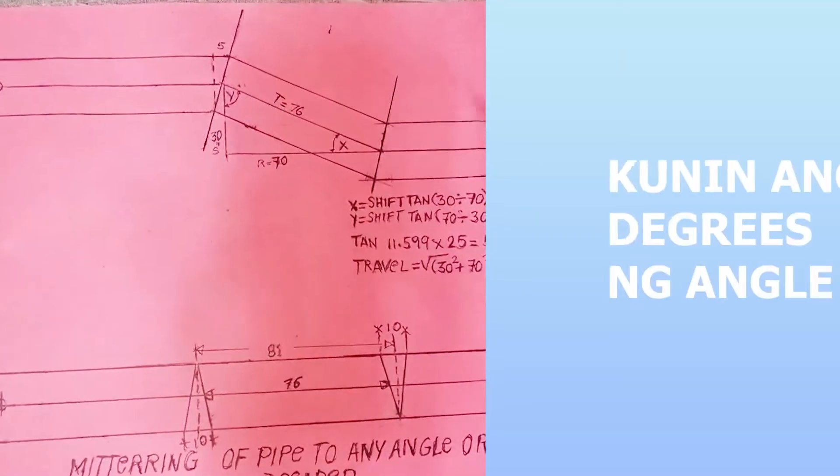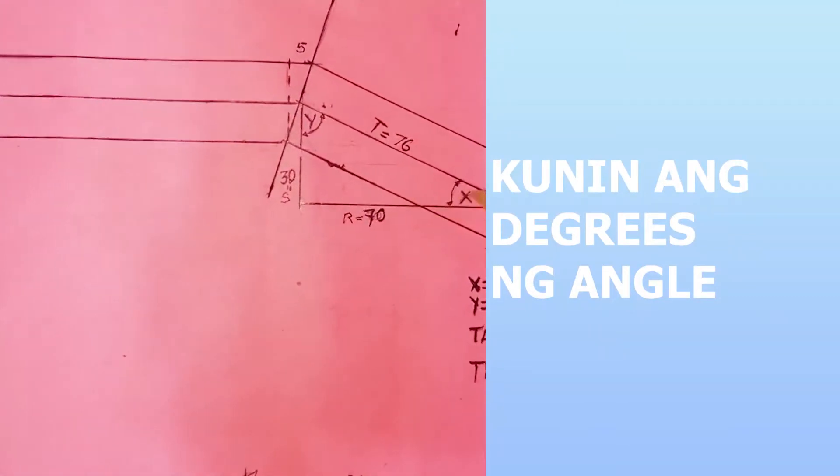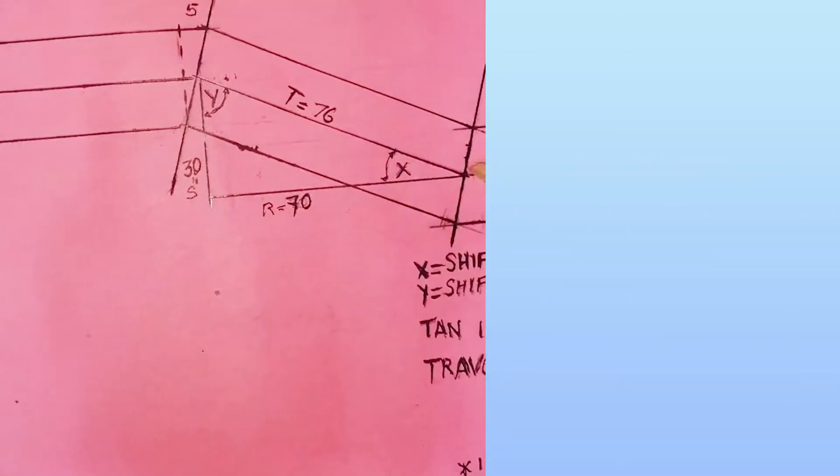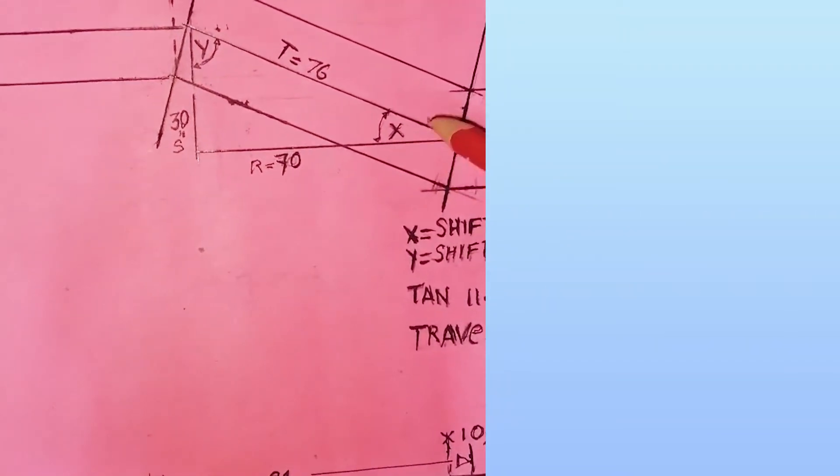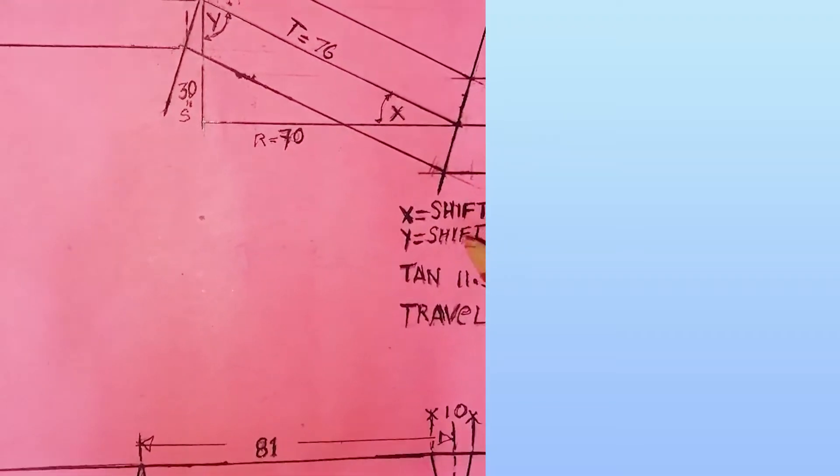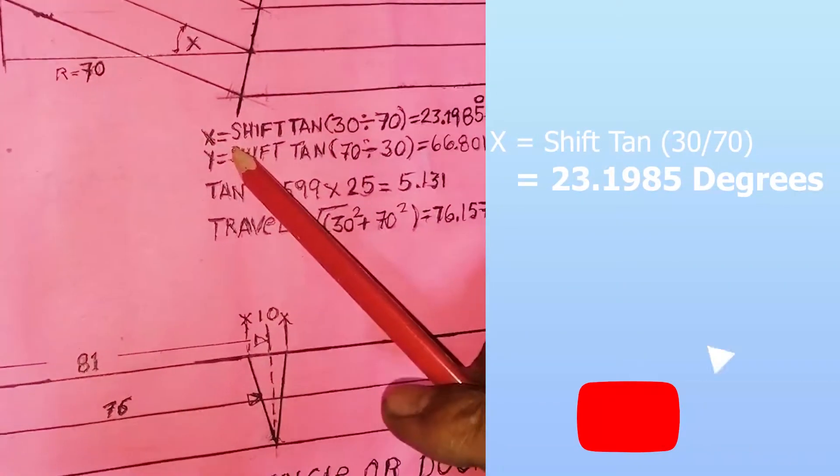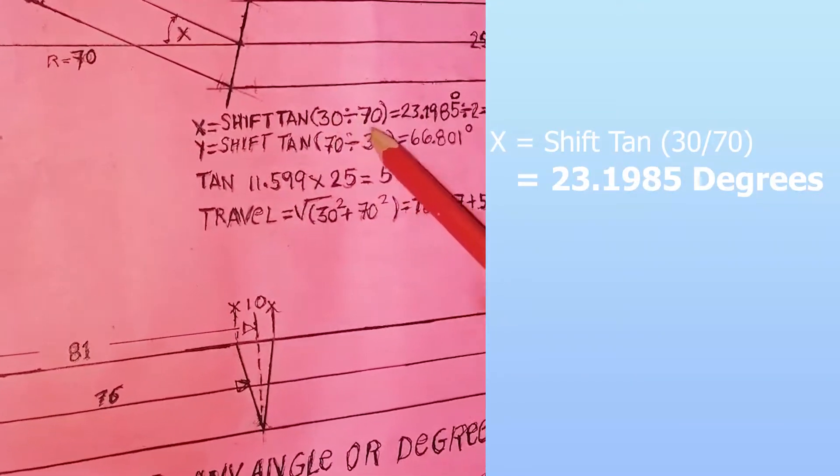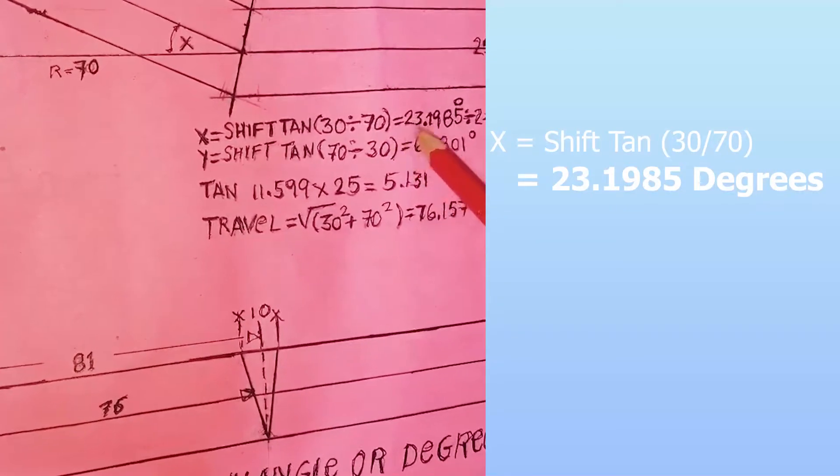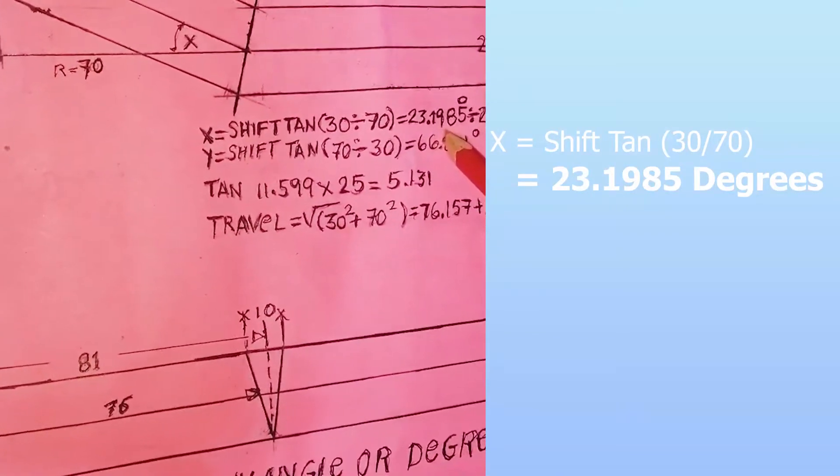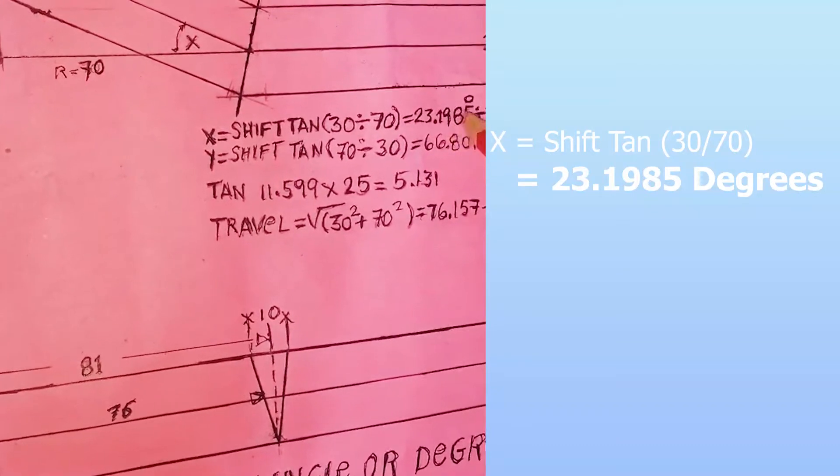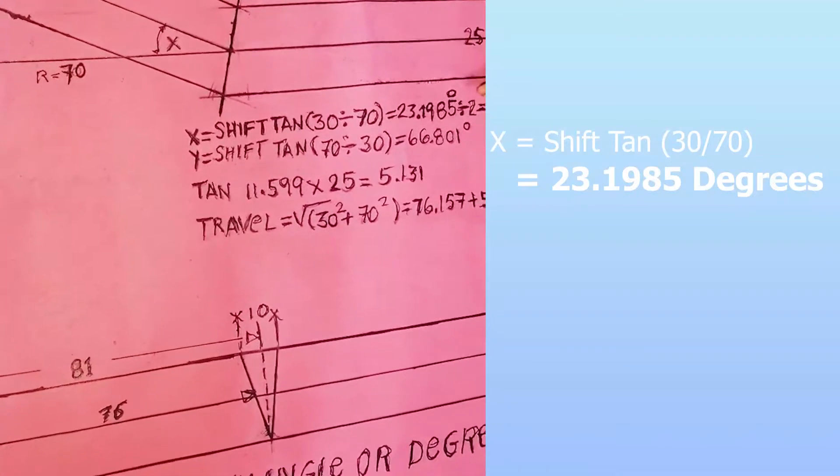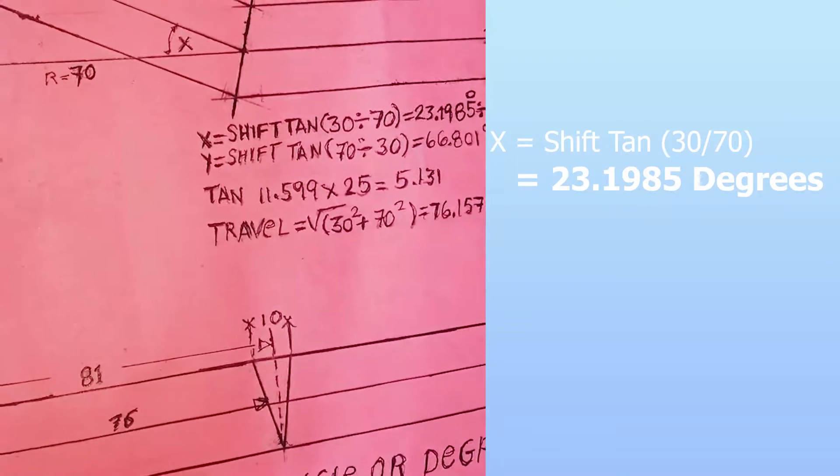Ang kukunin mo muna yung angle nito. Kaya yung pagkuna nitong x, yung degrees ng x, ito yun. X equals shift tangent, close 30 divided by 70, close equals 23.1985 degrees. Kaya ang degrees nito, nitong x, 23.1985 degrees.